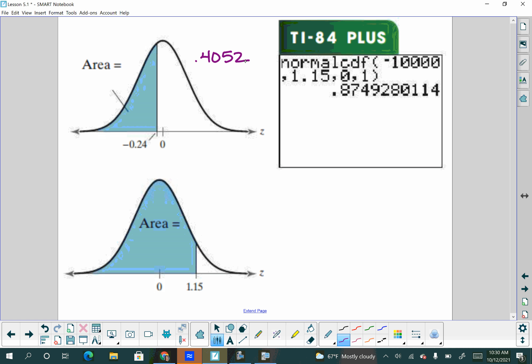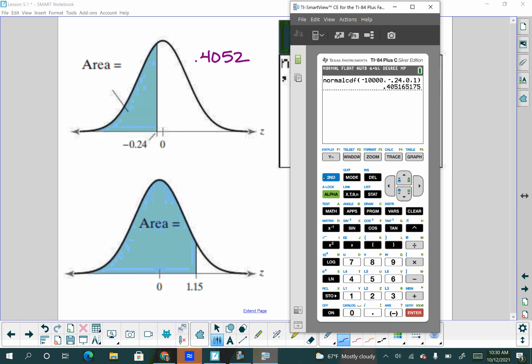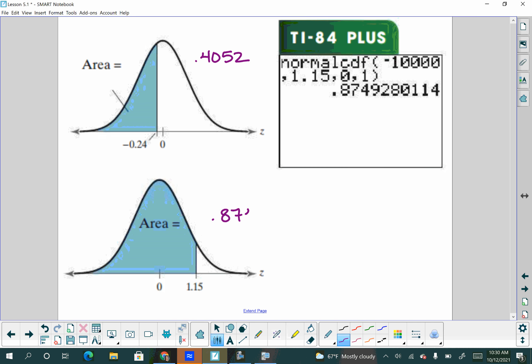Try 1.15. Same thing. So we're going to hit second VARS, normal CDF, and then it saves your value. So you guys don't have to remember them over and over again. Really the only thing that's changing from one to the next is that 1.15 or the upper value, which is 1.15 in this case. Enter, enter, enter, enter, enter, 0.8749 we're going to get for that one. And again, that's cumulative area to the left.